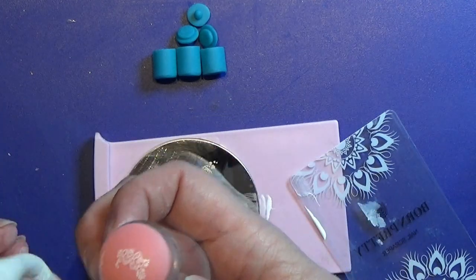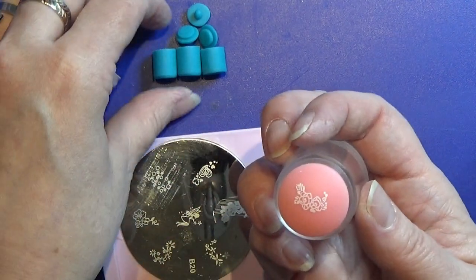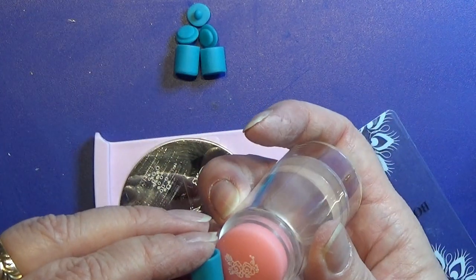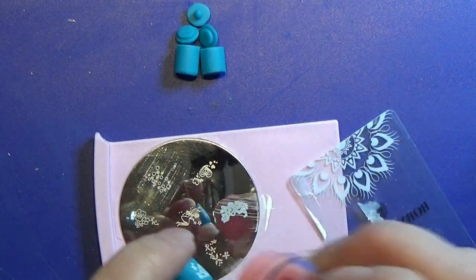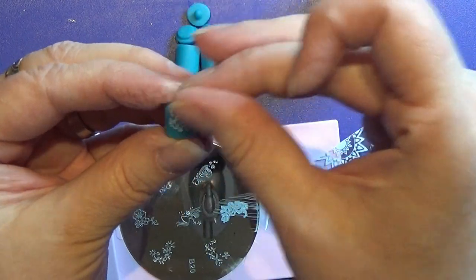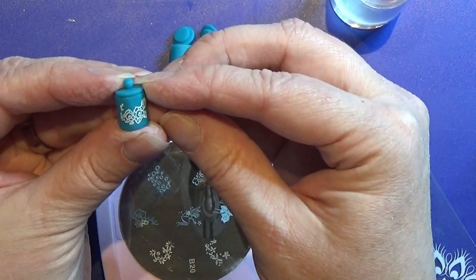I just cleaned up the edge here a tiny bit, and then I am ready to stamp this onto my bucket. So I'm just starting from one end and rolling it nice and easy onto the bucket, and there you have the pattern on your bucket and it's all done.